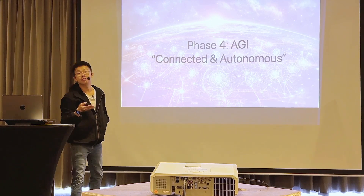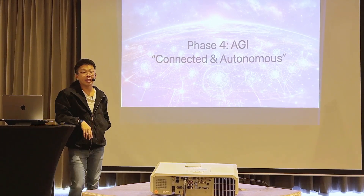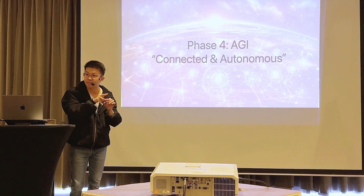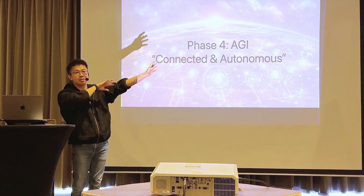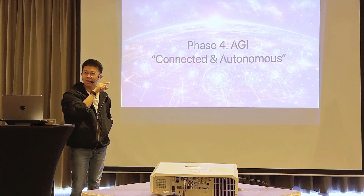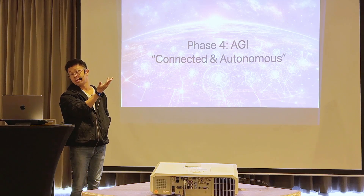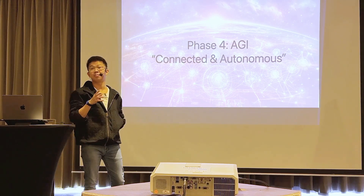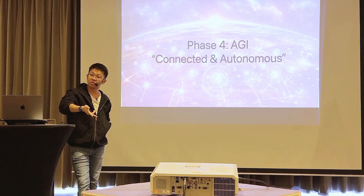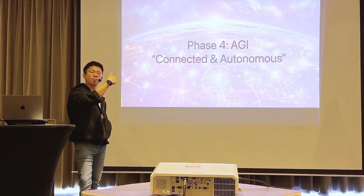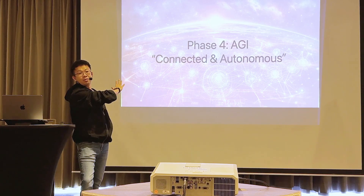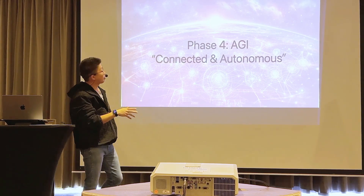I call it Connected and Autonomous. When we move to the fourth phase, AI will be able to connect to everything. Currently, ChatGPT can answer questions but still cannot command other services — like booking a flight or hotel. In the fourth phase, you'll be able to command the AI: go to Bangkok, travel for one week, book a five-star hotel — and then let it do the job, think the plan, and execute it.